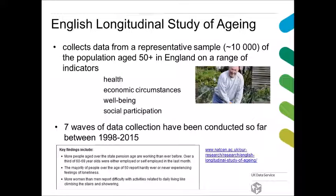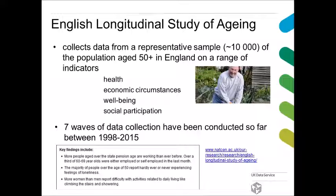The English Longitudinal Study of Aging collects data from a representative sample of roughly about 10,000 of the population aged 50-plus in England on a range of indicators such as health, economic circumstances, well-being, and social participation. One of the key findings of the most recent wave was, for example, that more people aged over the state pension age are now working than ever before. Over a third of 60 to 69-year-olds were either employed or self-employed in the last month.